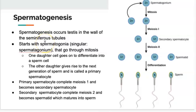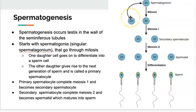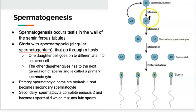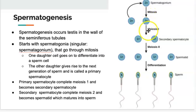In males, that first germ cell is called spermatogonia — it's going to lead to and create sperm. This 2N refers to it being diploid. The spermatogonia first goes through mitosis — just the cloning of that cell, not meiosis yet. When it goes through mitosis, it creates two cells: one stays as spermatogonia so it can redo the process, and the other becomes a primary spermatocyte — the first cell that has differentiated and decided to go through meiosis and eventually form sperm.